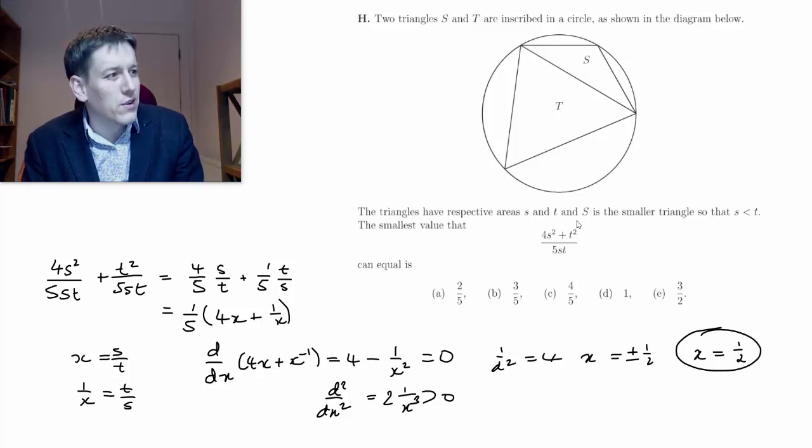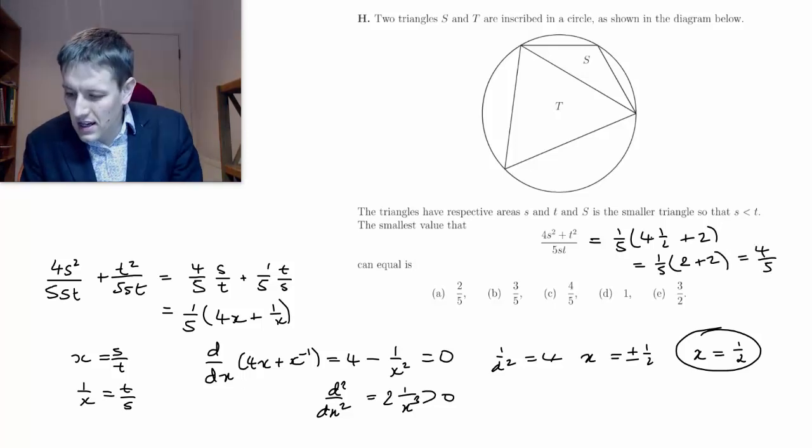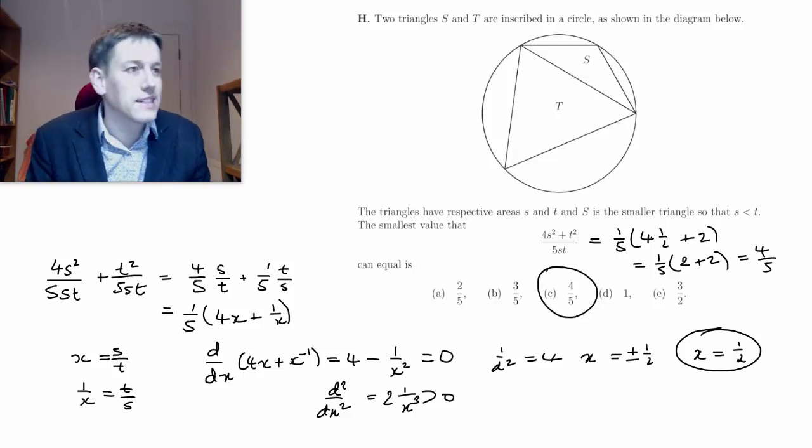So what would the value of this function be in that case? This, as I've written, x equals s over t is just 1 fifth of 4 times x plus 1 over x. So 4 times 1 half plus 2. So it's 1 fifth times 2 plus 2, which gives me an answer of 4 fifths. And that's one of the options there, c.